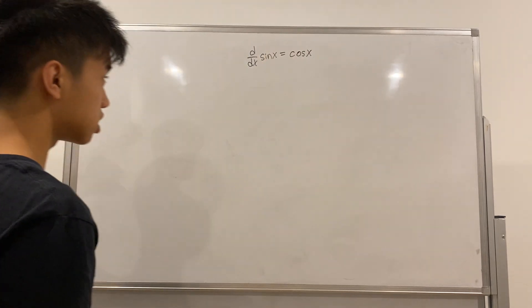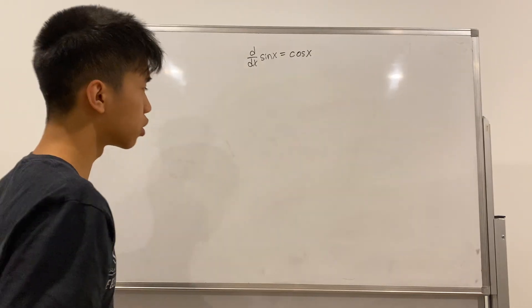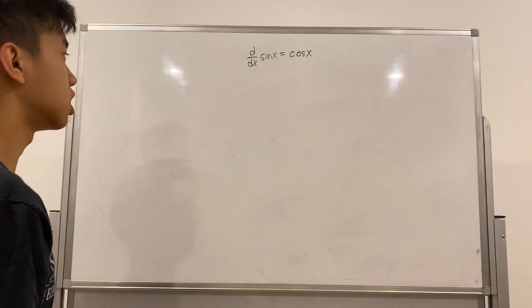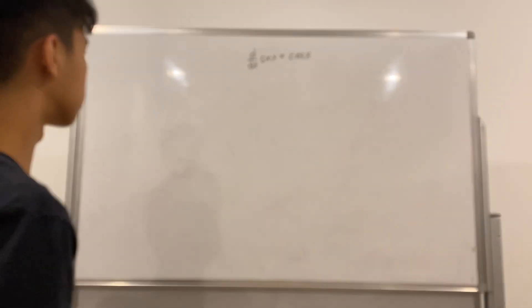Now, in your calculus class, you probably learned that the derivative of sine of x is cosine of x, but you never really learned why. You just saw it and accepted it, and then used it in your problems. That was it. You never learned why.